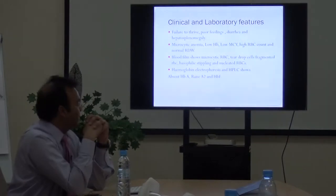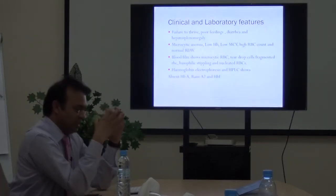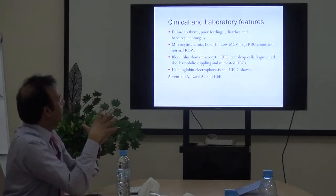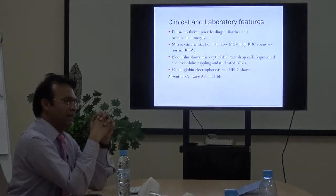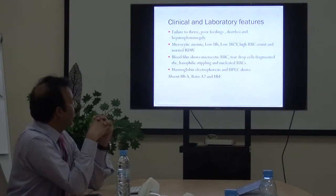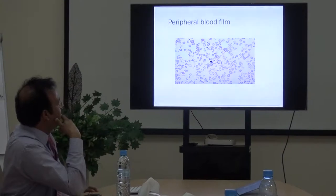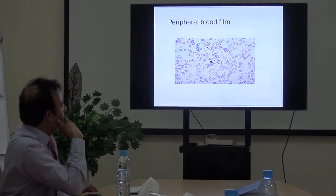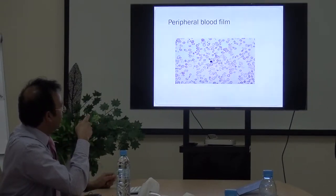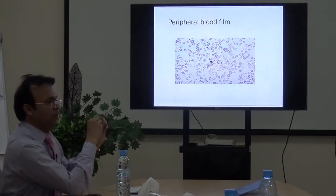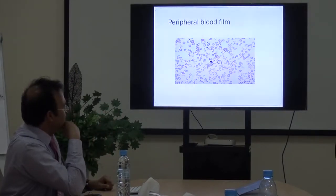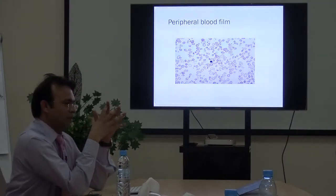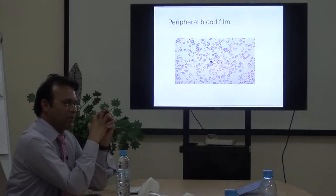Regarding clinical and laboratory features, thalassemia patients generally present at an early age — not in the neonatal period but after six months — with failure to thrive, poor feeding, diarrhea, skeletal deformities, and borderline low hemoglobin. On the blood film you can see microcytic hypochromic cells with a wide variety of abnormalities including poikilocytes, tear drops, blister cells, and fragmented RBCs. In homozygous beta thalassemia you also see nucleated RBCs and basophilic stippling.